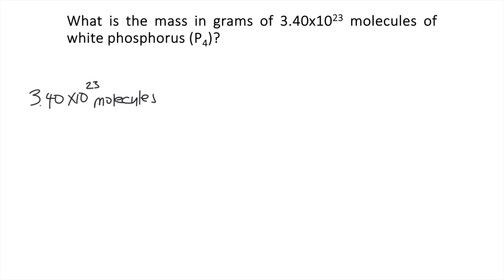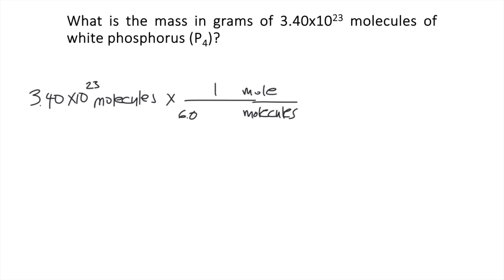The first thing you are going to do is to convert molecules into moles. So we will convert molecules — put that in the denominator — into moles. There's a special number we're going to use to convert molecules to moles, and we call that Avogadro's number. So Avogadro's number: 1 mole is equivalent to 6.022 times 10 to the 23 molecules.